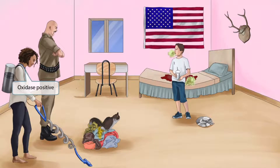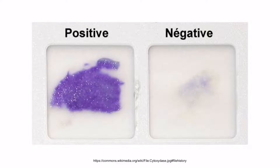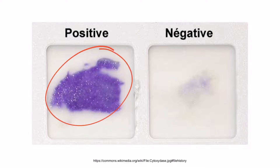We've added the kid's mom to the scene who is vacuuming up the mess. She's wearing a blue necklace, which is here to help you remember that H. pylori is oxidase positive. The blue or purple color in the oxidase test indicates that the organism is oxidase positive, as we covered in our Neisseria overview video.